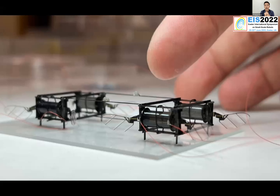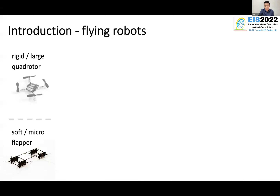This is a picture of the tiny robot in our lab. As you can see, there are four pairs of wings on the robot, and it's a flying robot. So every time when people see it, the first question they ask is how do you compare this to the traditional quadrotor? Here's a comparison — on the top is a traditional rigid large quadrotor, and at the bottom is the soft micro flapper that we have in our lab.